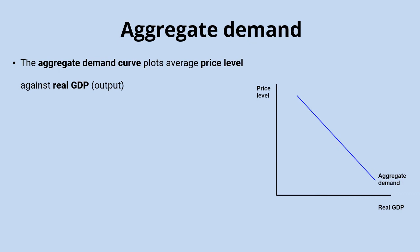And on the x-axis, we've got not quantity, but real GDP or output — the total value of all of the output in an economy. So not the quantity of a good in an individual market. And so we don't label the curve D for demand; we label it AD for aggregate demand. It's really important to get that labeling right.